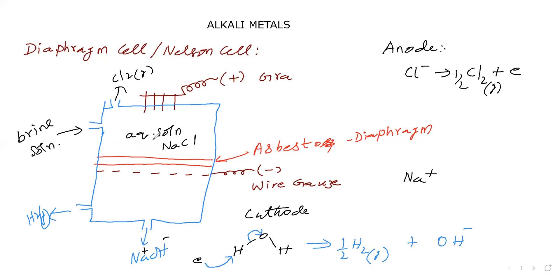So in summary: the anodic product is Cl₂, the cathodic product is H₂ gas, and we collect sodium hydroxide from the cell. The electrolyte is brine solution — aqueous solution of sodium chloride.